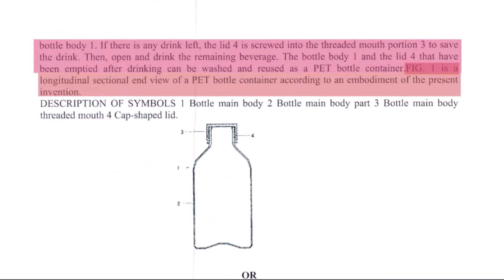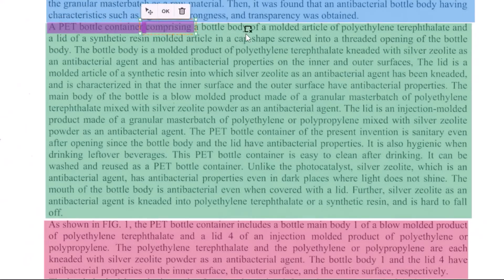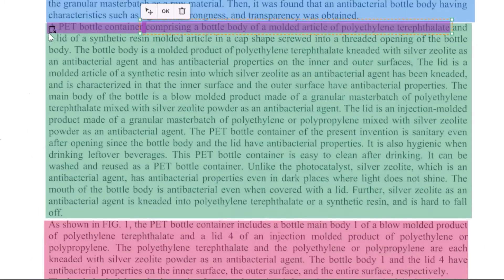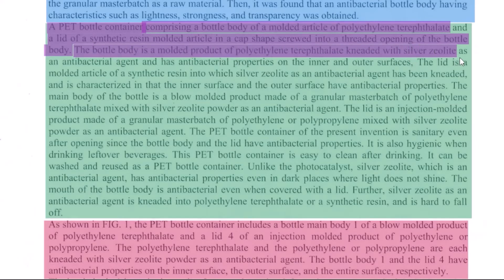Next is the main focus point — the claims of our invention. A shortcut is to go back to the summary section and pick the claims from there. The summary says 'a PET bottle container' — this becomes your preamble. 'Comprising' becomes your transitional phrase. 'A bottle body' is your first element, and 'a lid' is your second element. But since we have not talked about anything specific to the invention yet, the important part is the silver zeolite added as the antibacterial agent. We need to provide this detail in claim 1 for the claim to be novel, using the word 'wherein': 'Wherein the bottle body is a molded product of polyethylene... with silver zeolite as the antibacterial agent.'